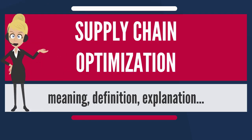Supply chain optimization is the application of processes and tools to ensure the optimal operation of a manufacturing and distribution supply chain. This includes the optimal placement of inventory within the supply chain, minimizing operating costs including manufacturing costs, transportation costs, and distribution costs. This often involves the application of mathematical modeling techniques using computer software.